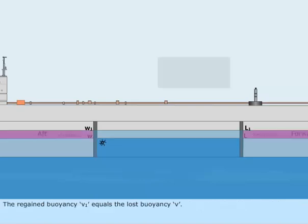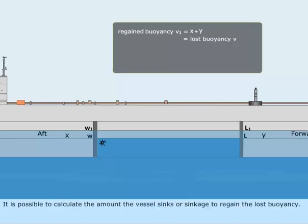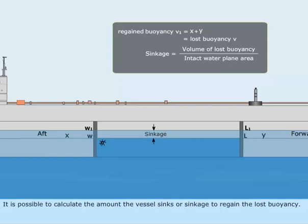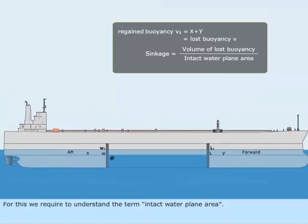The regained buoyancy V1 equals the lost buoyancy V. It is possible to calculate the amount the vessel sinks, or sinkage, to regain the lost buoyancy. For this, we require to understand the term intact waterplane area.